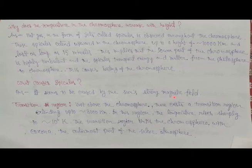What is the transition region? Just above the chromosphere there exists a transition region extending up to near about 3000 kilometers. In this region the temperature rises sharply to near about 10 to the power 6 Kelvin. The transition region links the chromosphere with corona, which is the outermost part of the solar atmosphere.